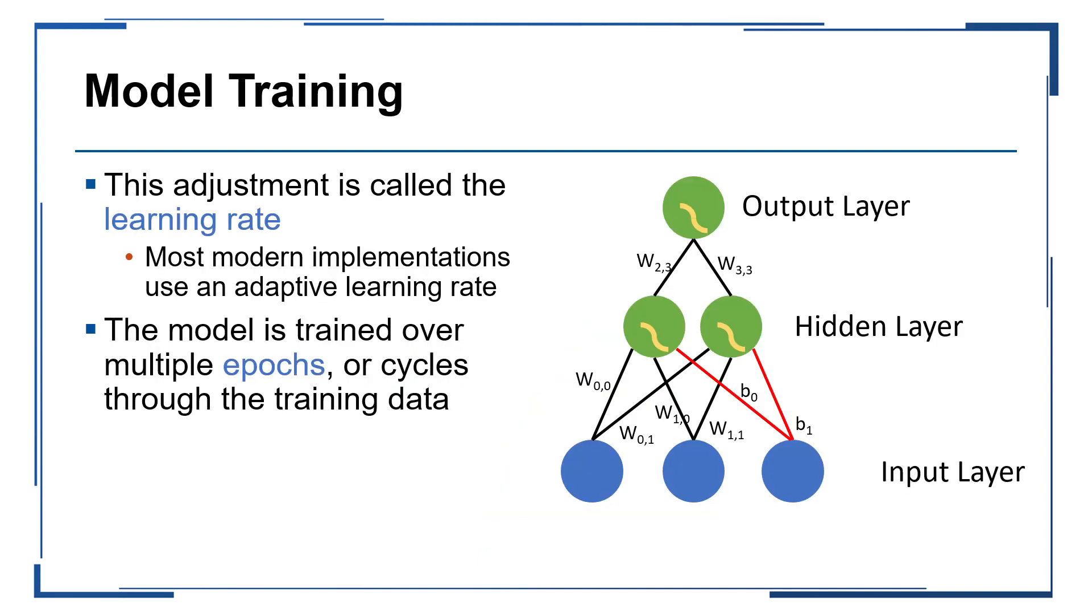So the small step that the model takes with each iteration is called the learning rate, or it's also sometimes called the step size. Neural networks are trained over multiple epochs, that's that word, it looks like epoch, but typically it's pronounced epic, or cycles through the entire training data. So one epoch means that the model has been trained fully on all samples within your data set, and you might go through multiple cycles of this training during the full training process.